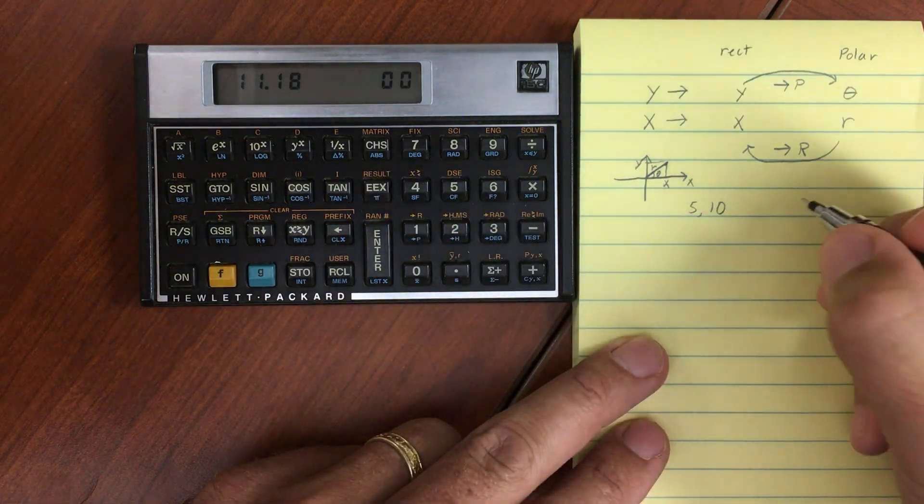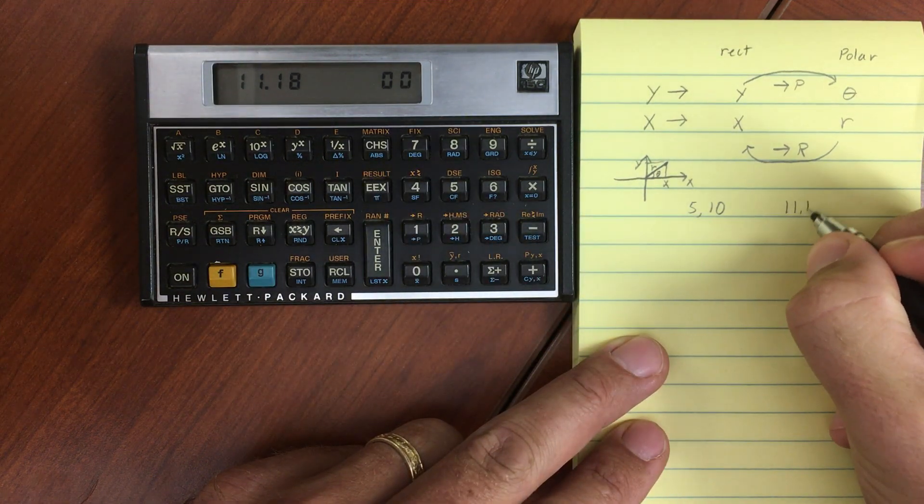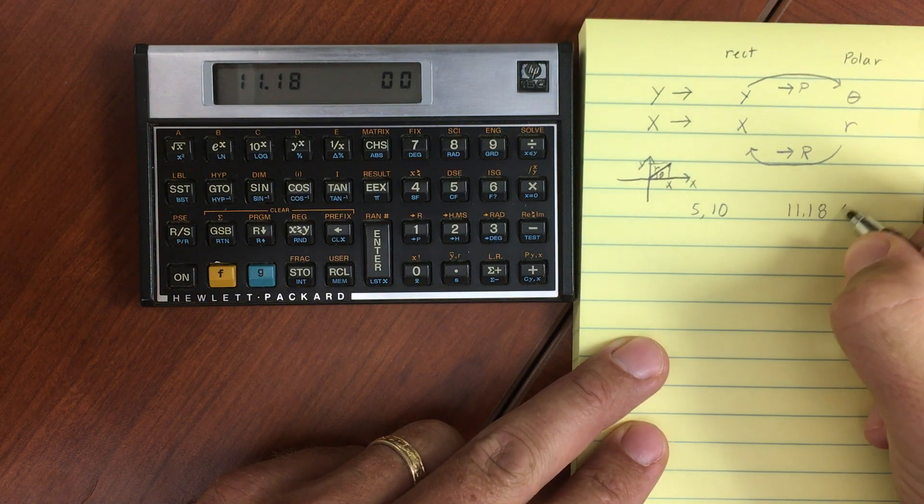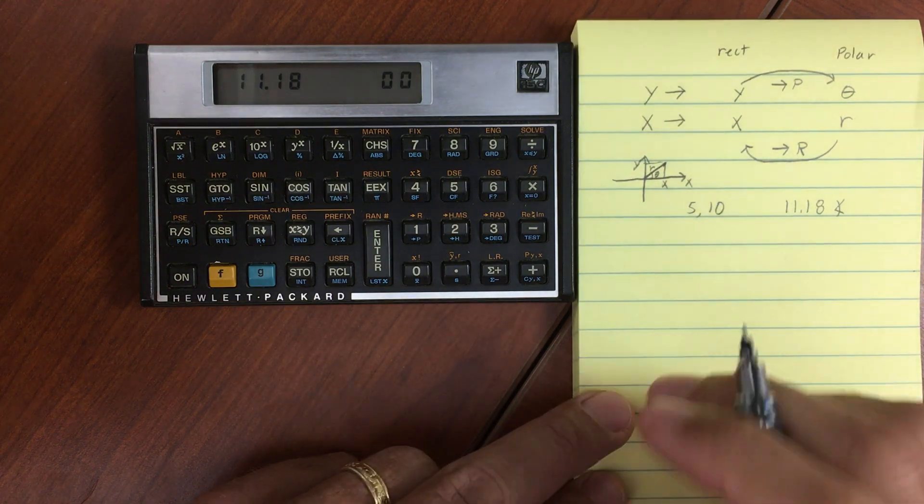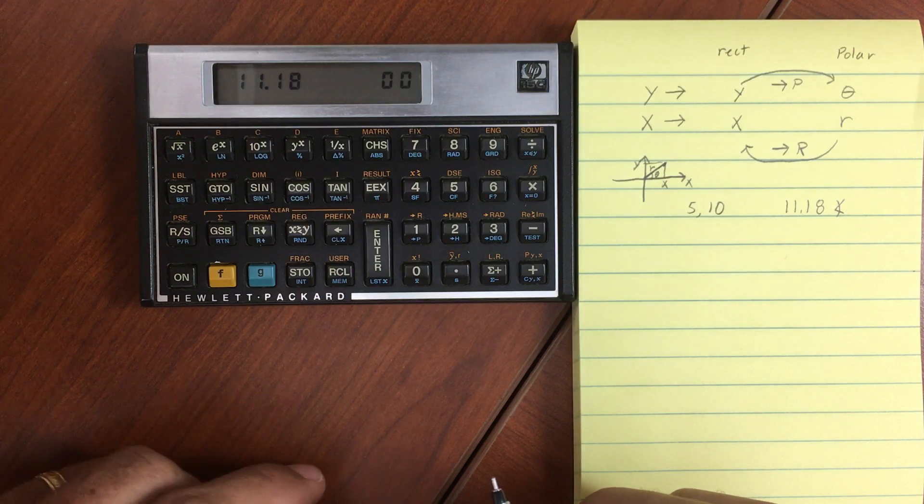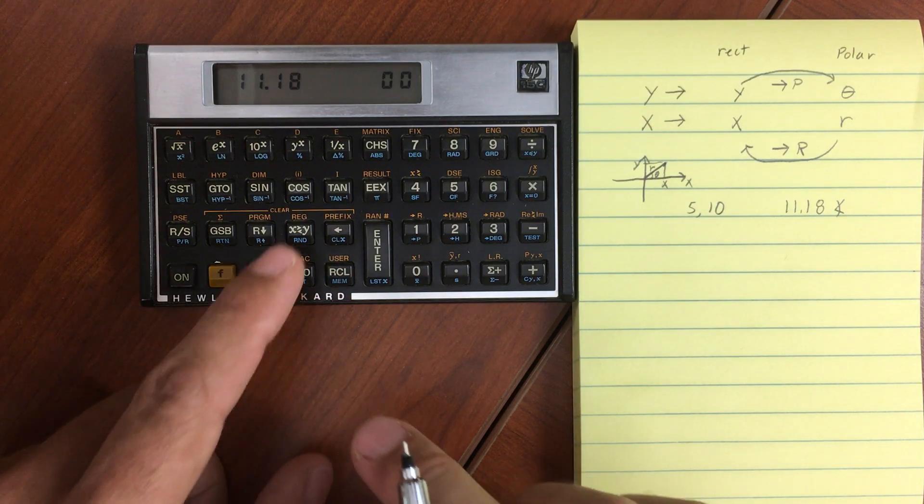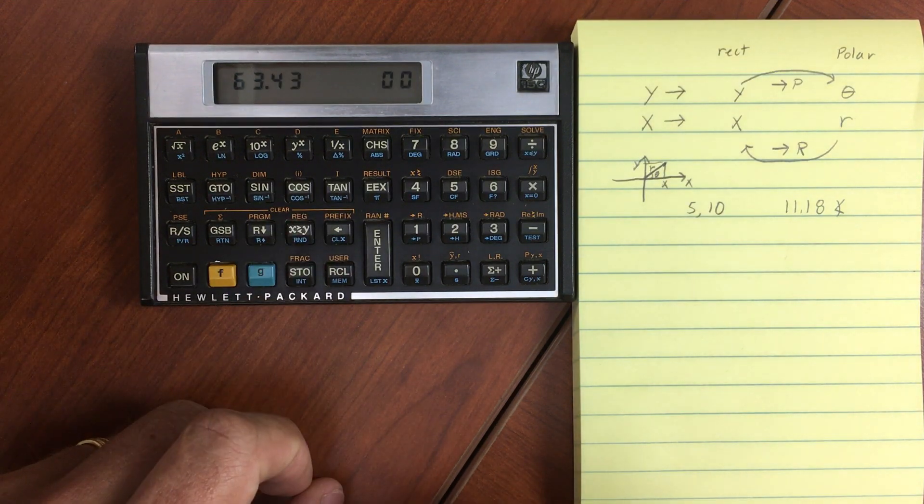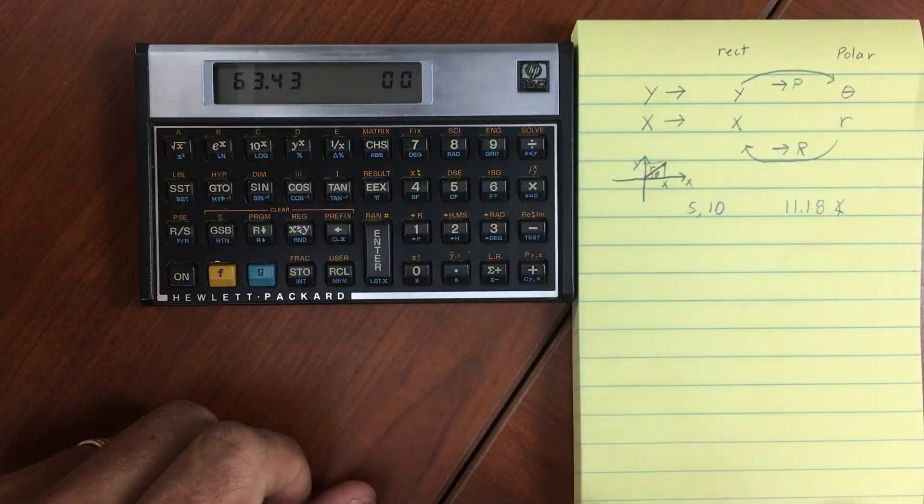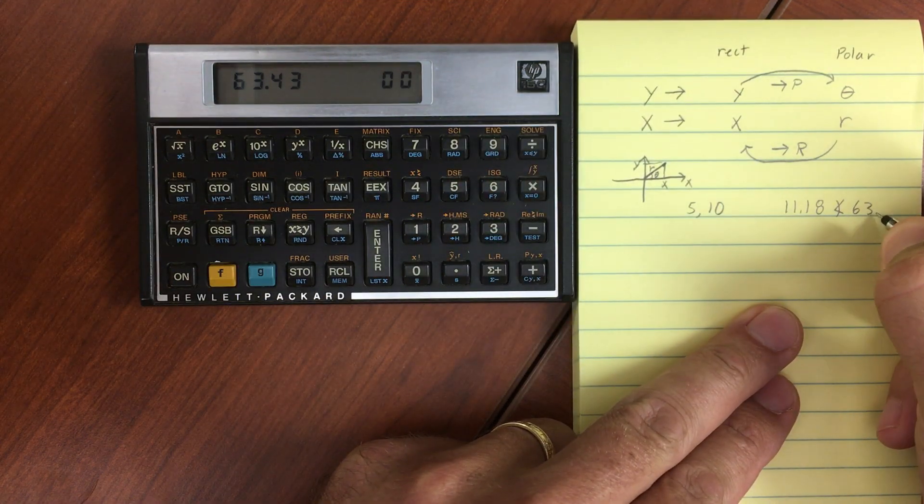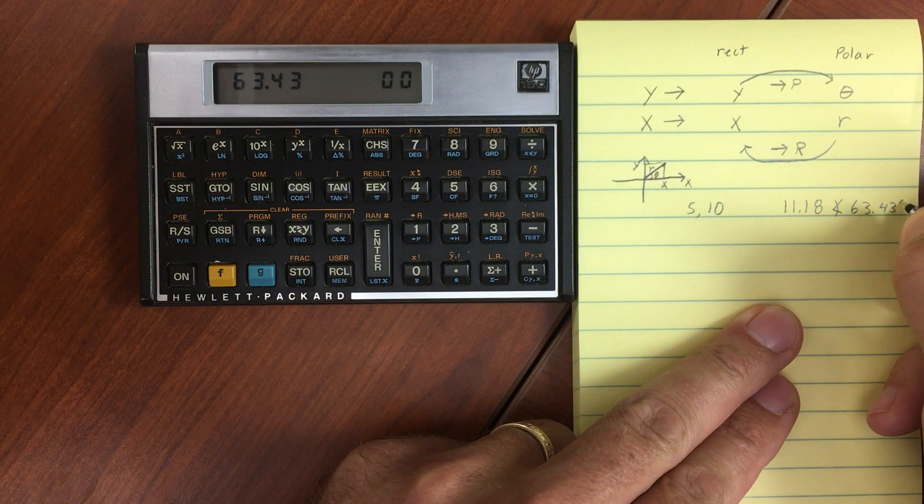So this is going to be our r, 11.18 at angle. And then to see the other part of the stack, we'd have to do the xy swap. So now we're looking at y. It's just been shifted down to the x. So that's going to be at angle 63.43 degrees.